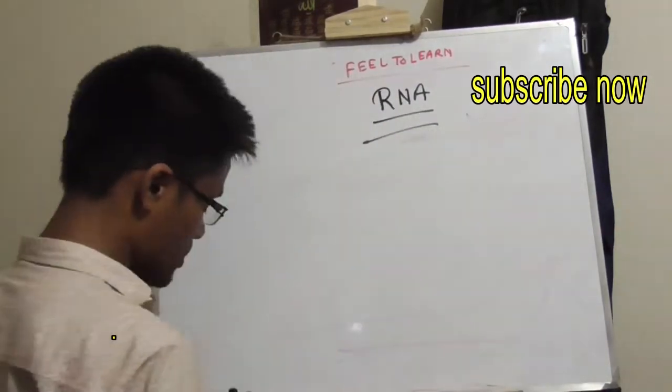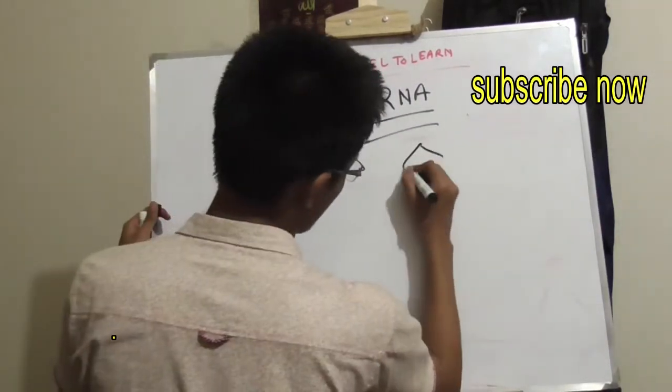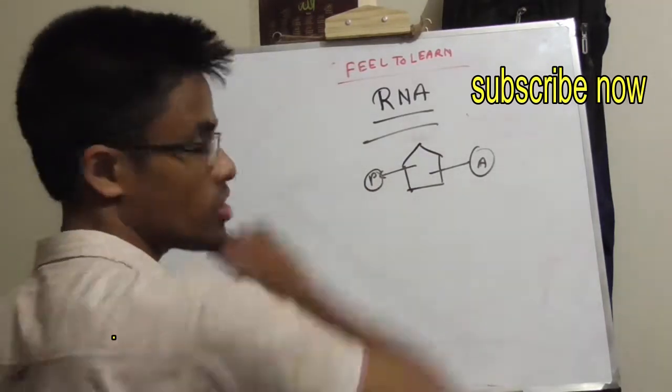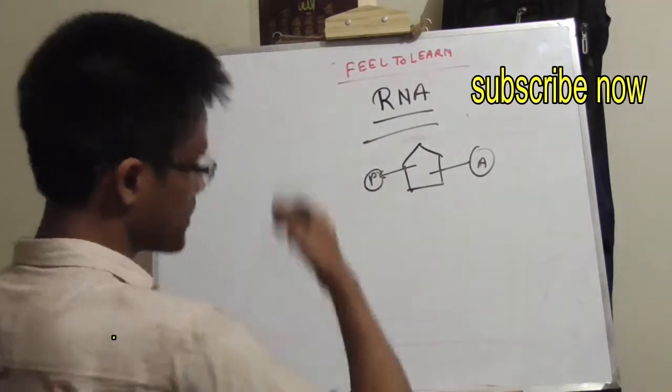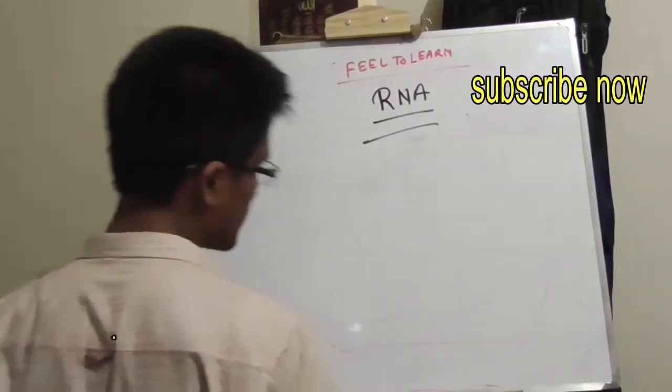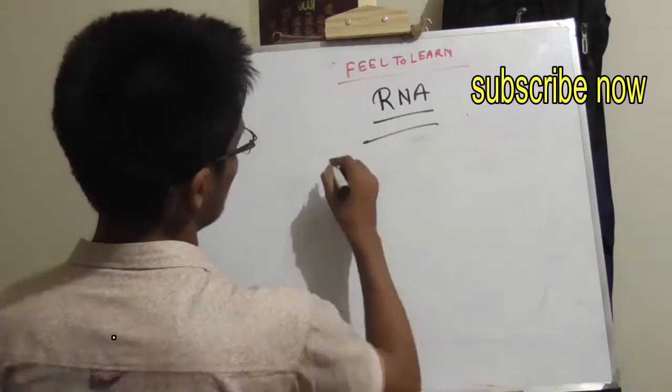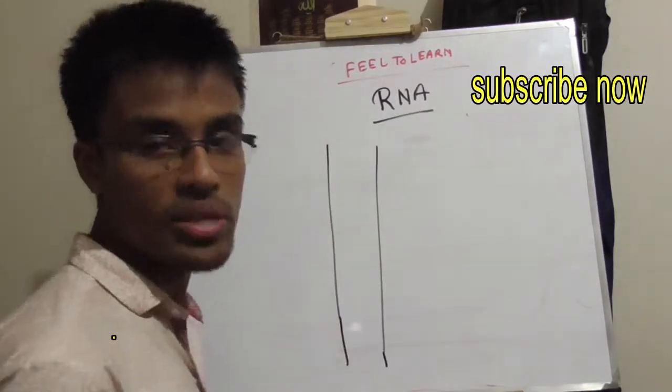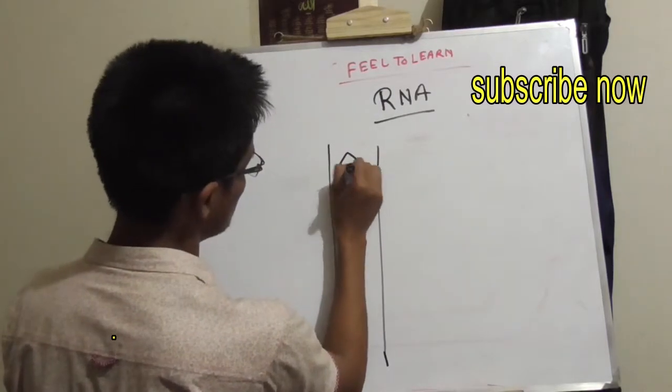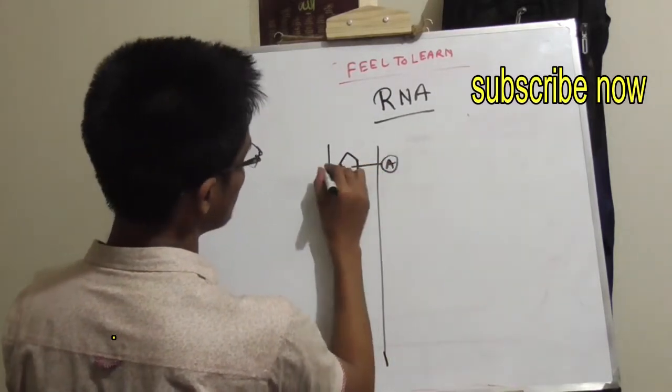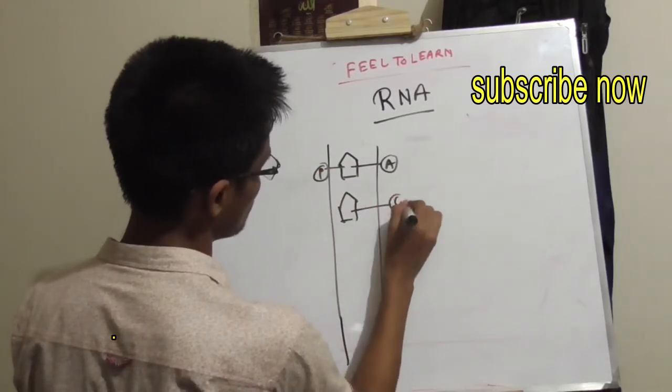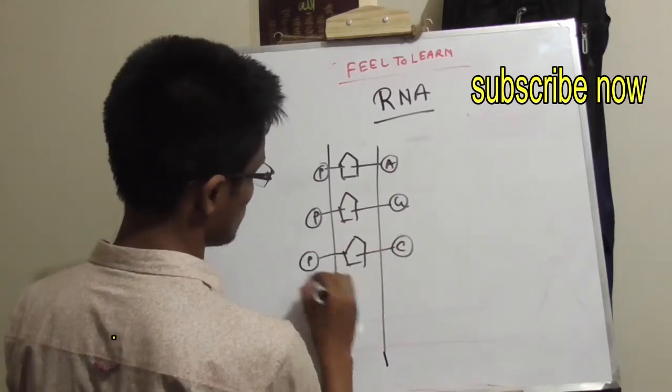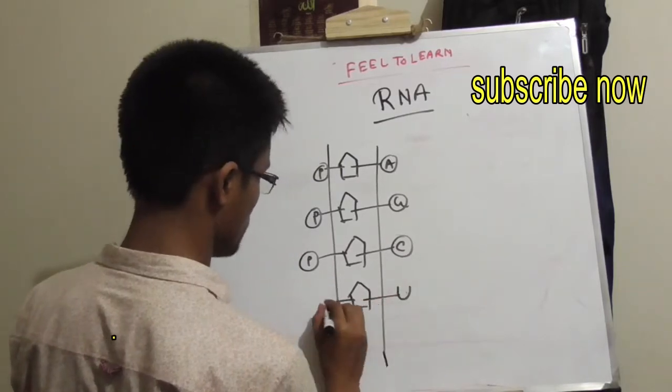The nucleotide, the sugar, the nitrogen base, phosphate. The sugar is ribose. Now the sugar is ribose. It is the sugar in this case.